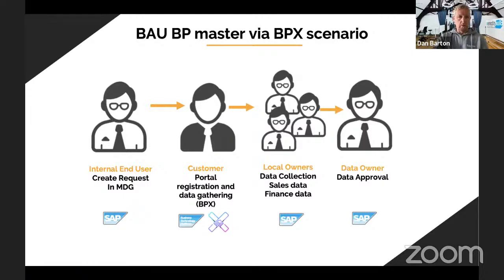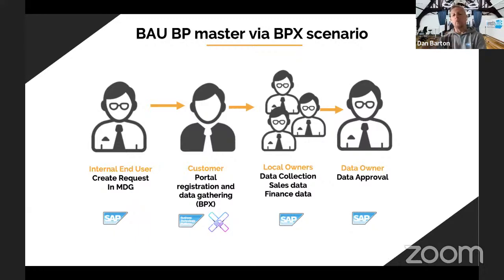In this business partner process, somebody creates a request within MDG or Maestro. The customer or supplier then gets an email saying they'd like to onboard and start trading. They go through the relevant security checks, onboard their data, key it in — which gets checked in real time. Once they've submitted, it flows into the relevant system — MDG or Maestro — which will again validate and send the workflow around the organization. This streamlines a lot of current processes where people are still doing Excel, email, Word documents, sending PDFs and proof of company ownership. It can all be automated using BTP and Maestro.